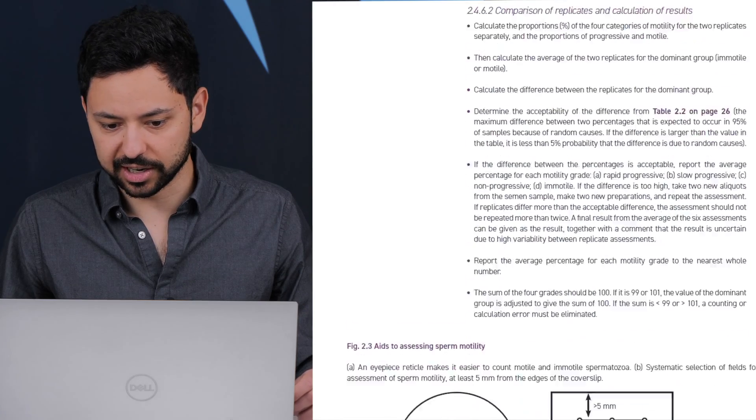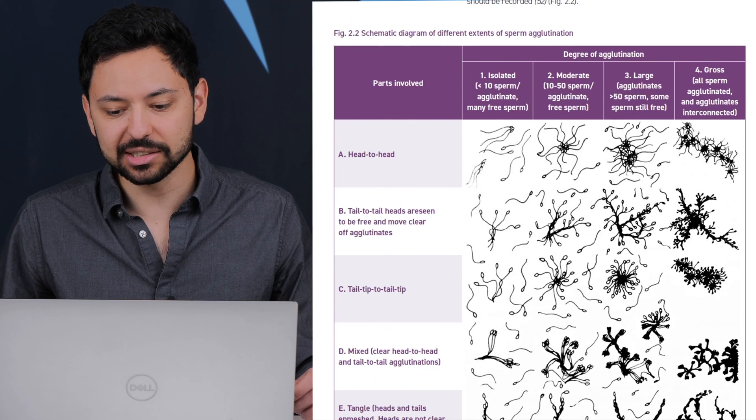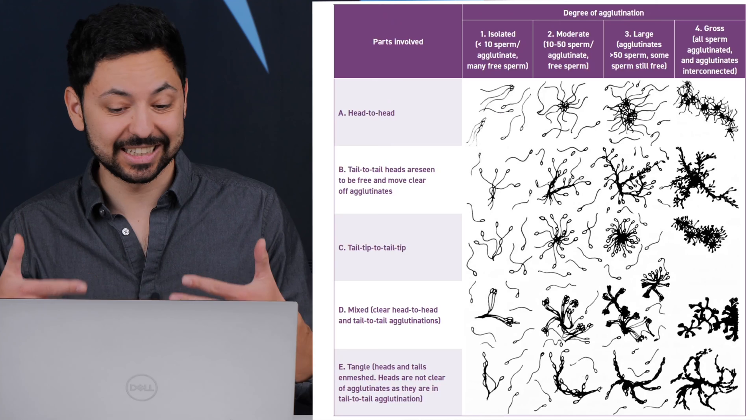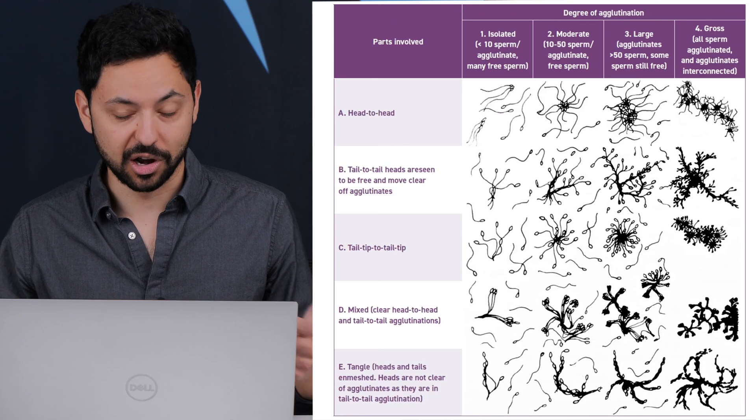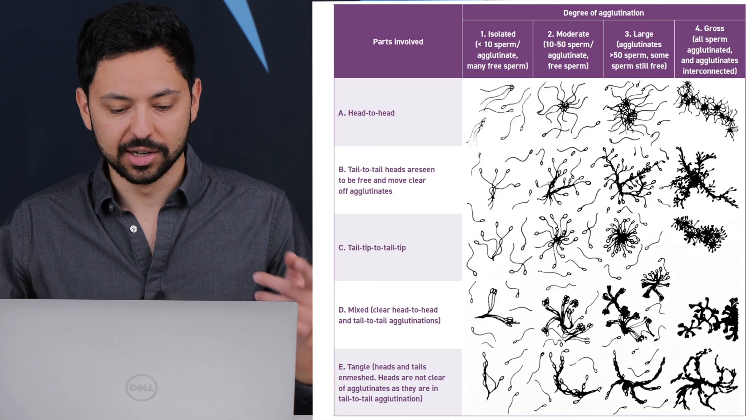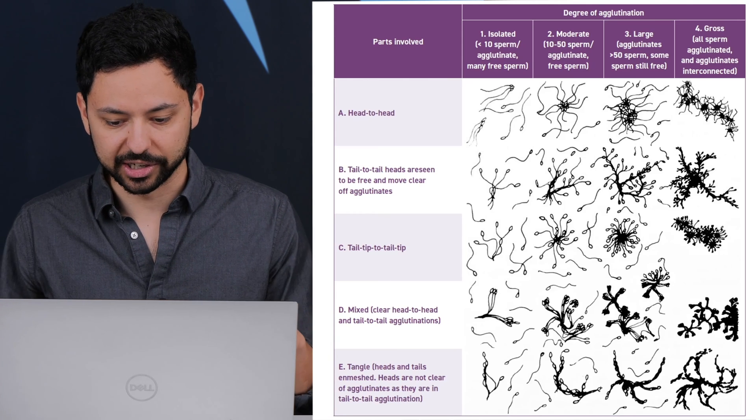They also have a good section about sperm agglutination. I believe that's how you pronounce that. Essentially, how many of your sperm are sticking together and are therefore non-motile. So for example, you can have situations where the tails get bound up together or the heads are stuck together and they're not separated.